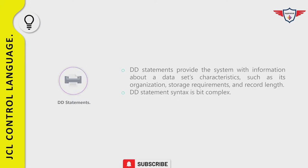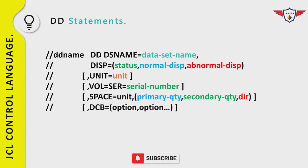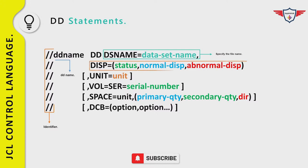The DD statement syntax begins with an identifier, then a DD name (the symbolic name of the dataset accessed in your program), then DD as the operation field, followed by DSN (the actual dataset name). The DISP parameter describes the status of the dataset and its processing at normal and abnormal job termination. DISP may have up to three positional subparameters separated by commas. UNIT specifies the group name, device type, or device number where the file resides. If the file is already cataloged, UNIT is not required.